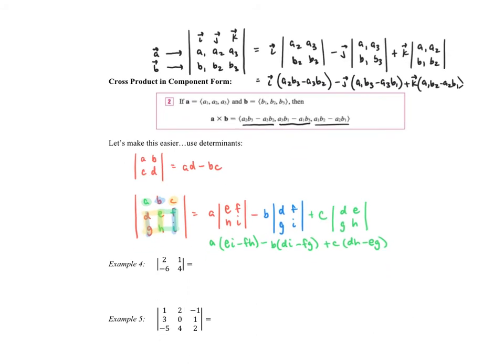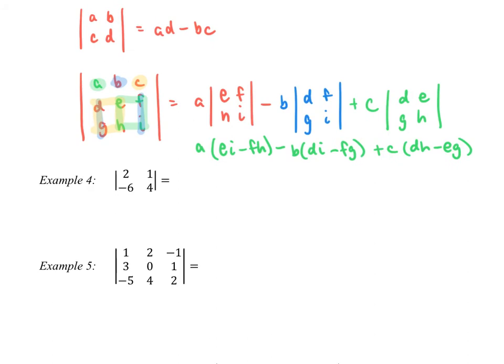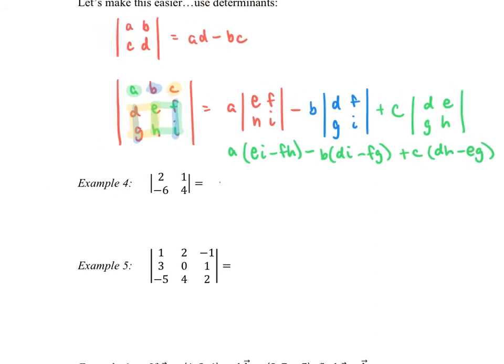I'm going to go through examples 4 and 5, which are not directly connected to vectors, but it's good review to make sure you understand how to calculate these. For example 4, we have 2 times 4, and then we subtract 1 times negative 6. So we have 8 plus 6, giving us 14 as our determinant.